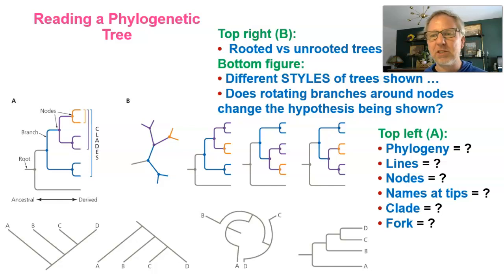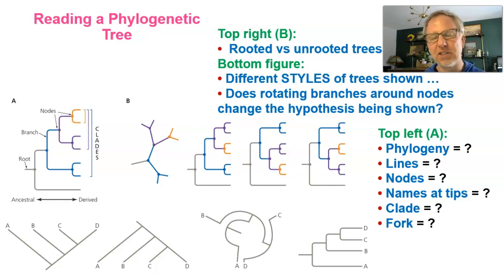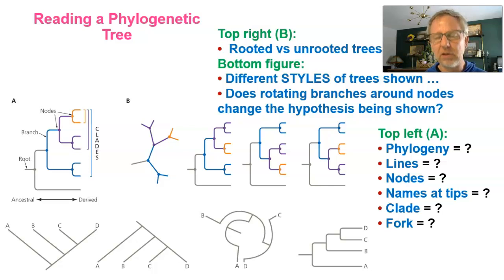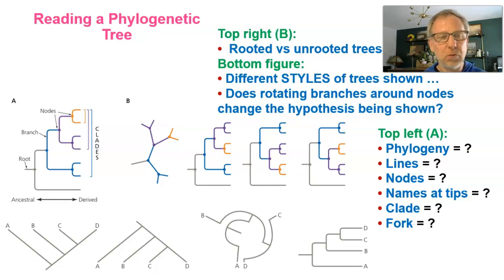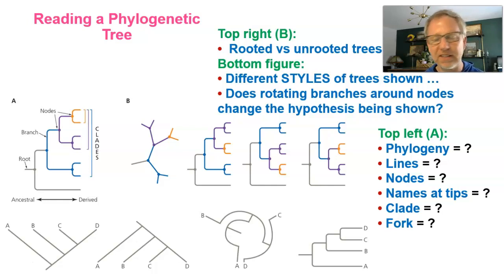The tips of these branching diagrams represent the named lineages or taxa — perhaps the species we're showing in the diagram. A clade, also known as a monophyletic group, is a group that includes a common ancestor and all of its descendants. So if you look at figure A, the two branches that are orangish yellow connect to that node and form a clade. That group includes the common ancestor at that node and then the descendants, those two branches.